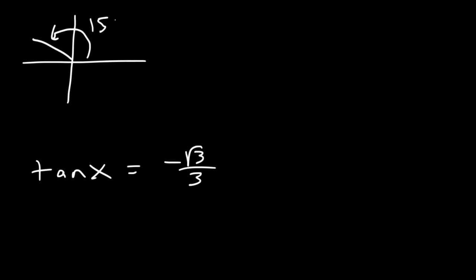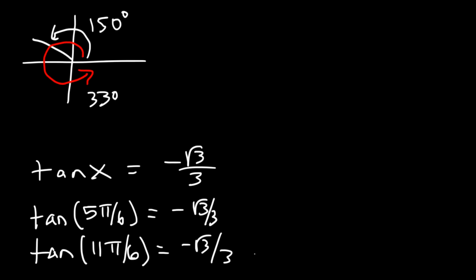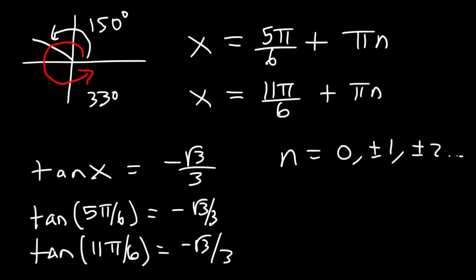So 150° gives the angle in quadrant 2, and 330° gives the angle in quadrant 4. Tangent of 150°, which is 5π/6, equals -√3/3. And tangent of 11π/6, which is 330°, equals the same value. The period of tangent and cotangent is π, so the answers are: x = 5π/6 + πn, or x = 11π/6 + πn, where n is any integer.